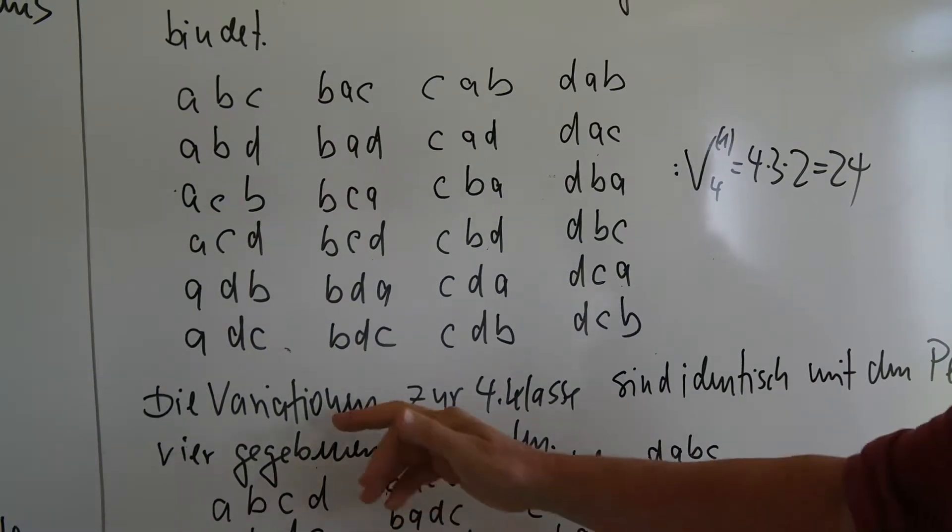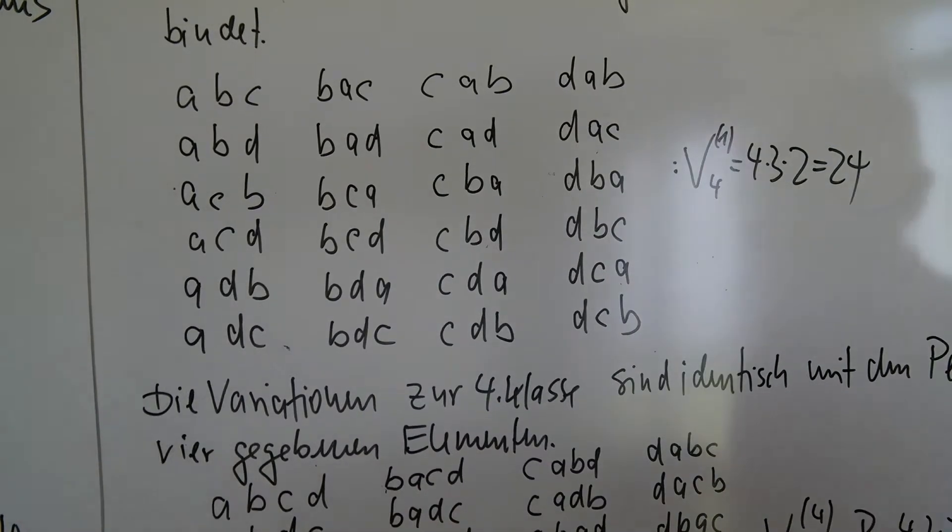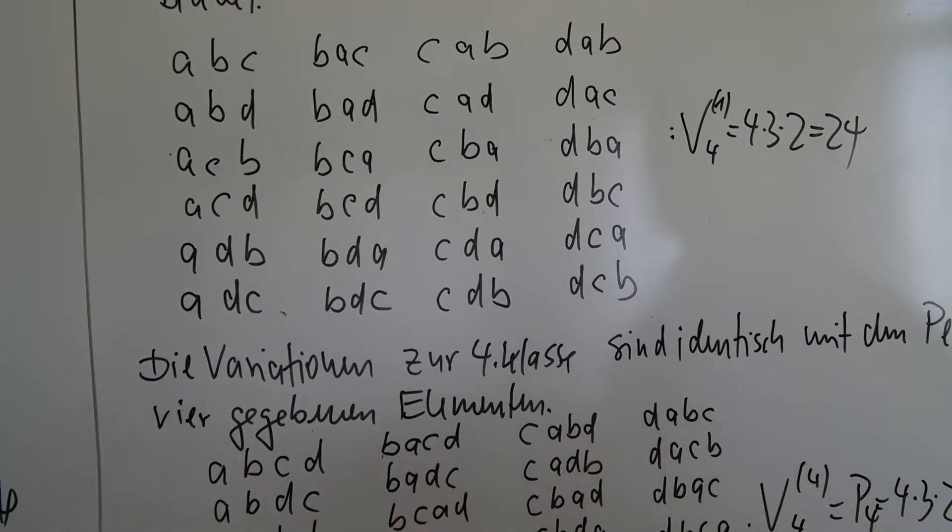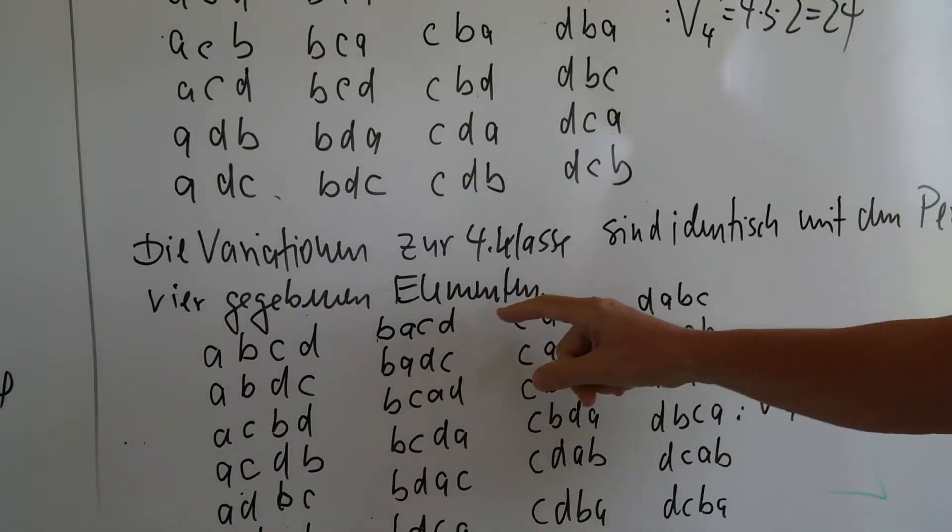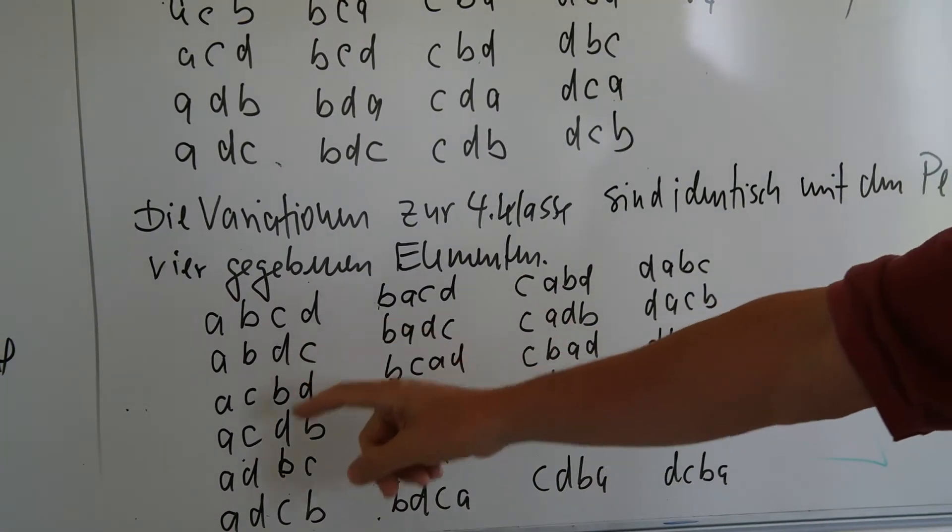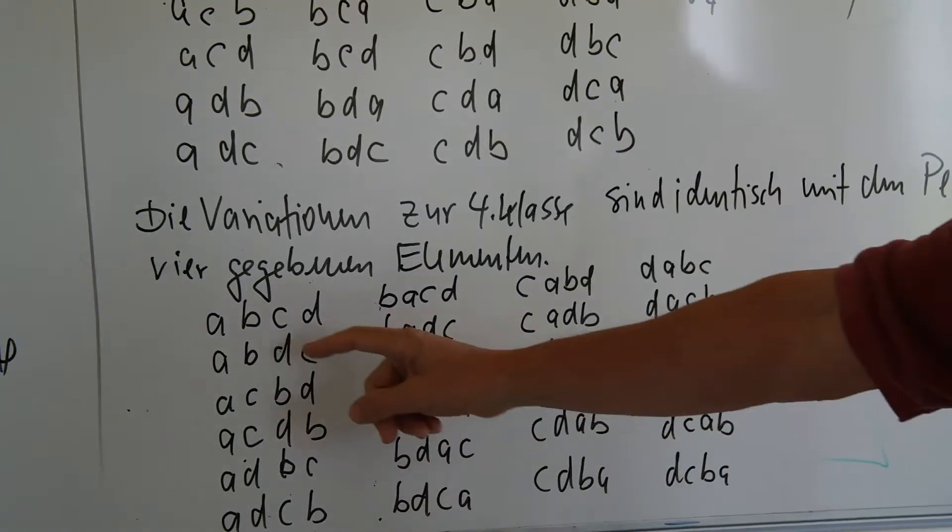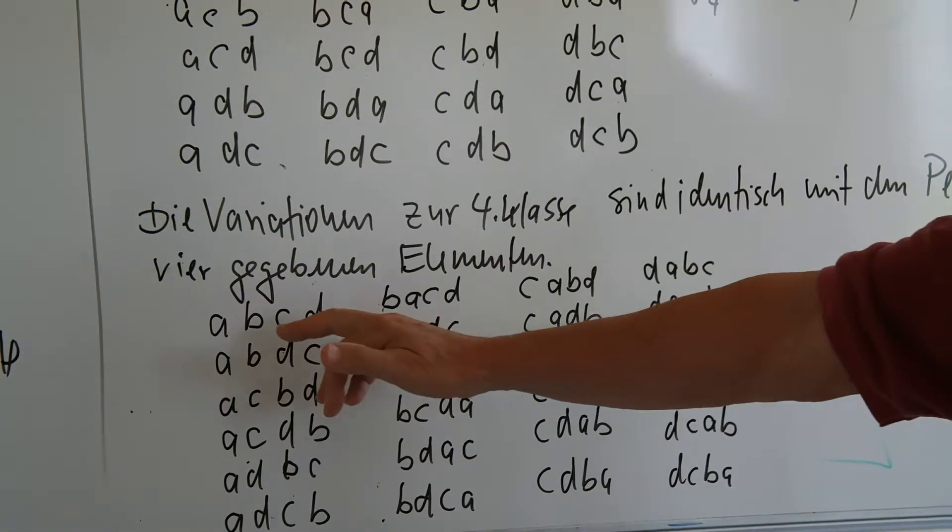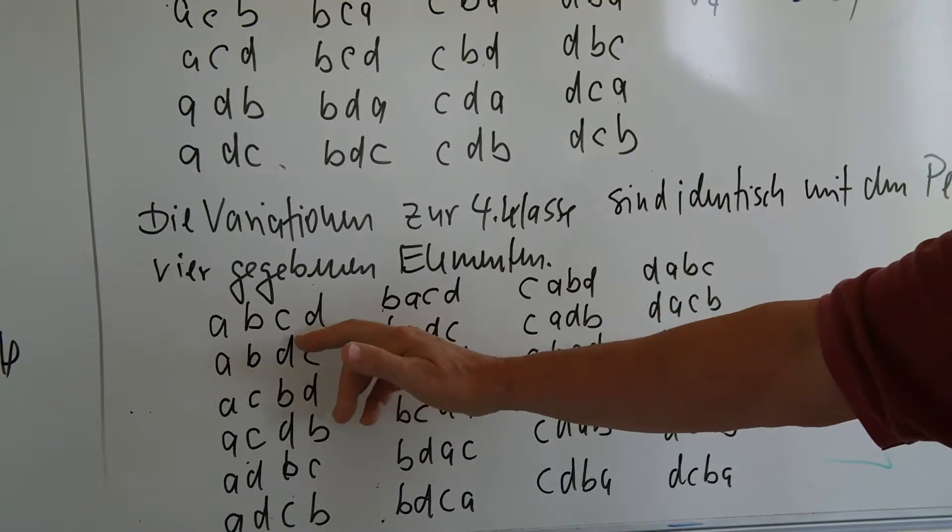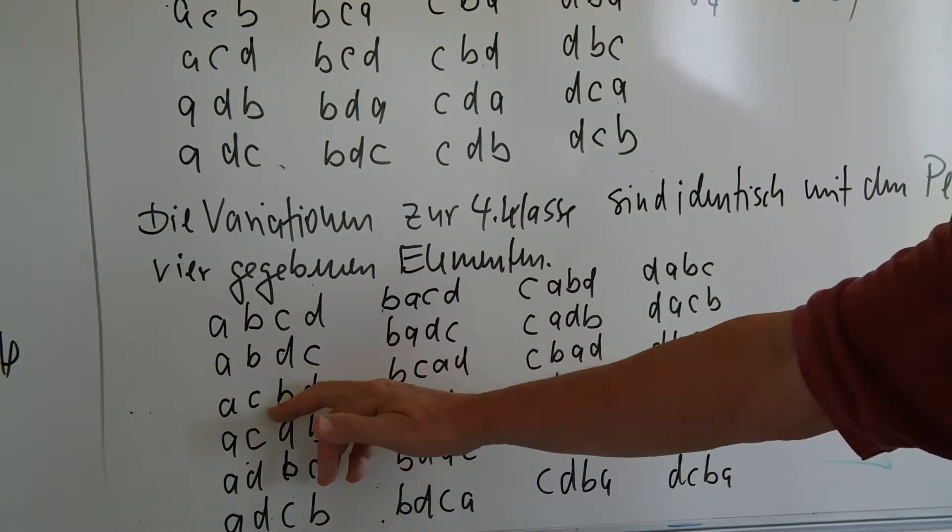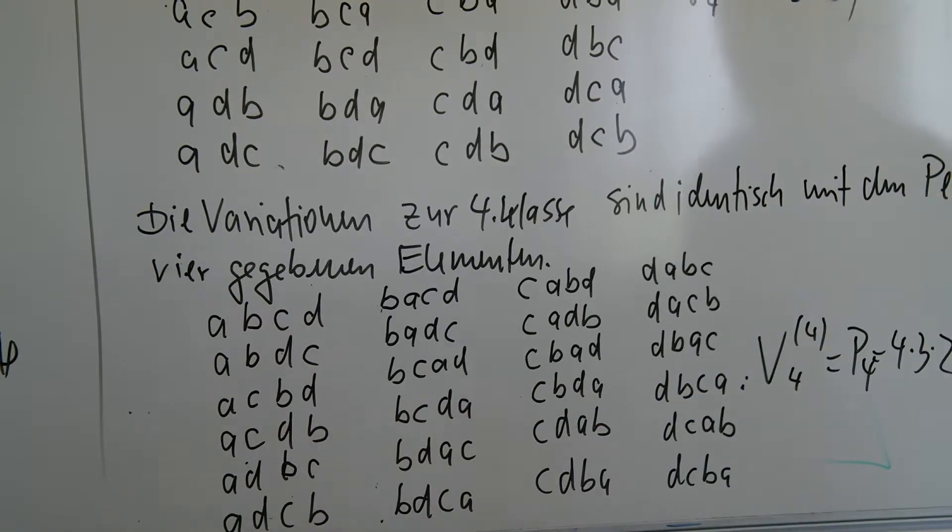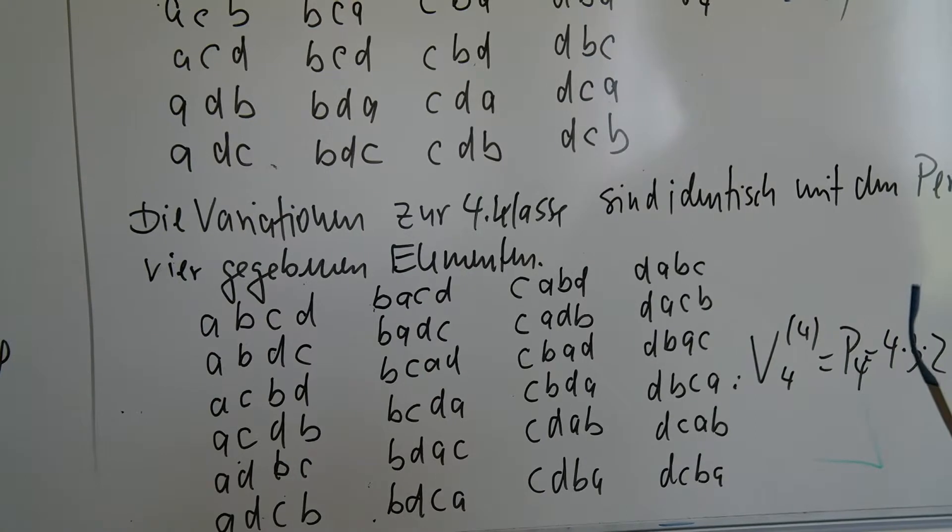Und als letztes haben wir dann die Variation zur vierten Klasse und die sind identisch mit den Permutationen aus den vier gegebenen Elementen. Und die Permutationen von vier Elementen, die hatten wir schon mal bei den Videopermutationen, das geht also aus von ABC, dann vertausche ich C mit D, dann kommt C an die zweite Stelle und zum Schluss D an die zweite Stelle. Kamera geht mal genau drauf.